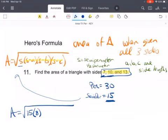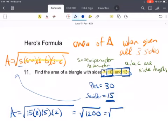15 minus 10 is 5, and then 15 minus 13 is 2. When I multiply all of those together, I'm going to get the square root of 1,200, which means I need to simplify that. And so I'm going to get 20 root 3.